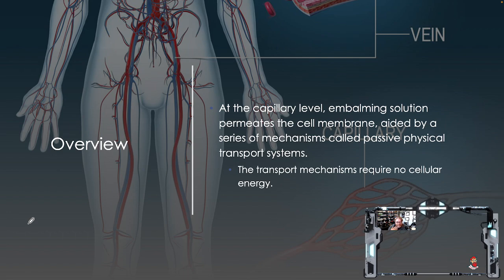In a living human body, we have active transport, which requires cellular energy — something has to instigate it, provoke it, and maintain it. And then passive transport, which basically just relies on the laws of nature.